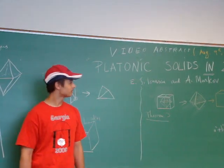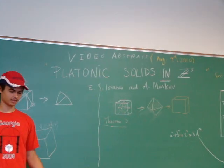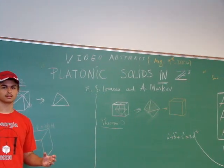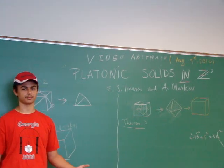So, first of all, what do we mean by in Z3? Basically, it's that the vertices of the platonic solids have integer coordinates in Euclidean three space.